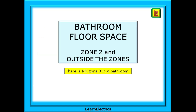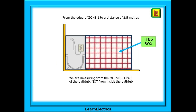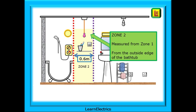Looking at the bathroom floor space: there is no zone 3 in a bathroom — another exam favourite to catch you out. There are two zones, and both start from the outside edge of the bathtub, from the edge of zone 1, not zone 0. This box extends along the floor to a distance of 2.5 meters from zone 1. Zone 2 is the space up to 0.6 meters from the edge of the bath — from the edge of zone 1. Notice there is no mention of zone 0.